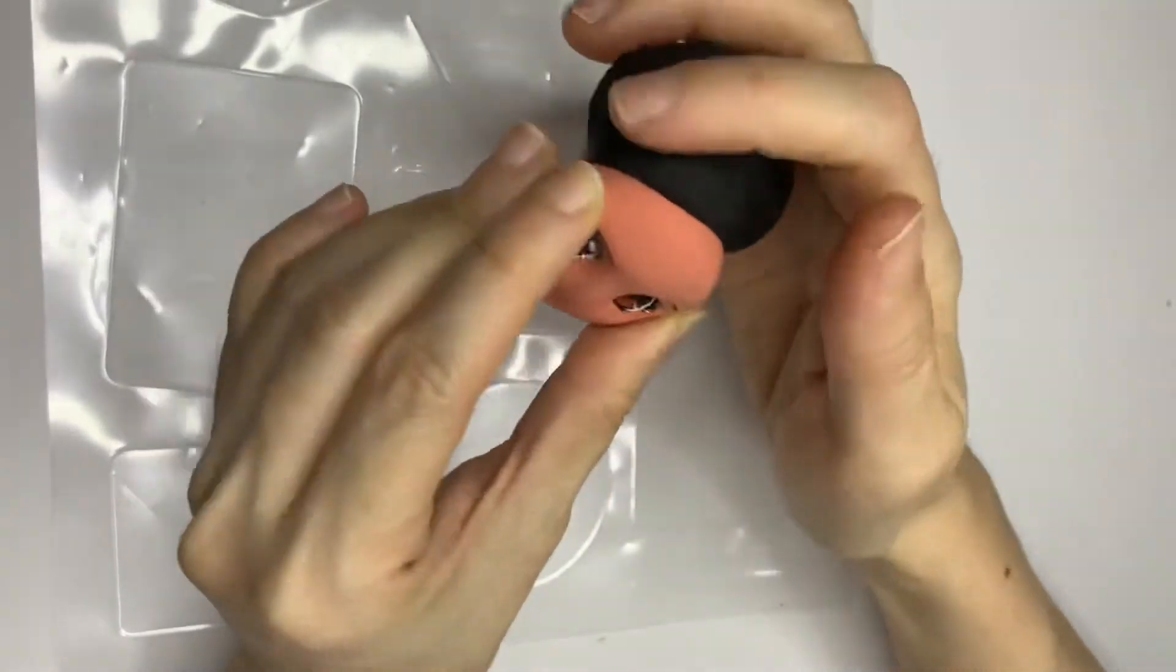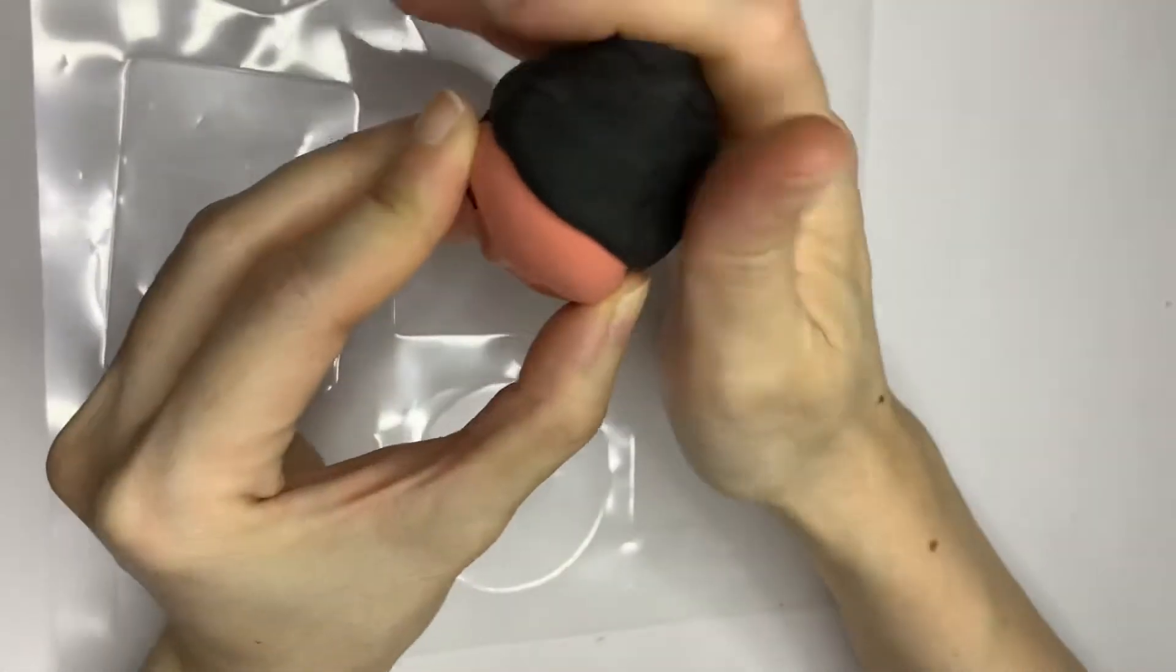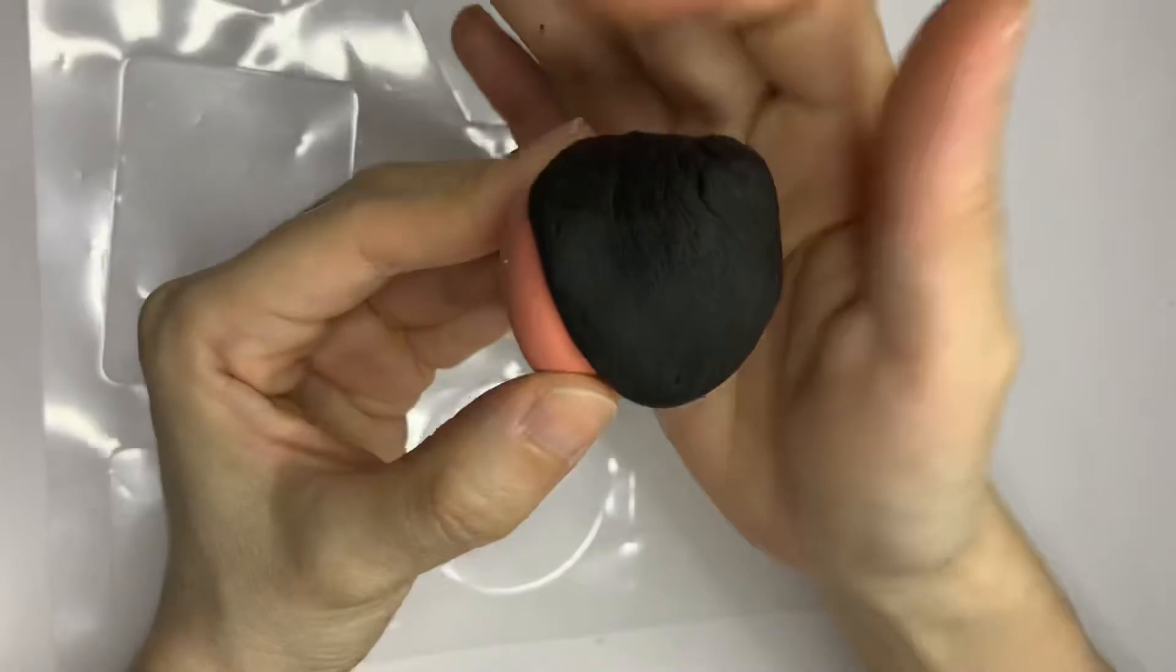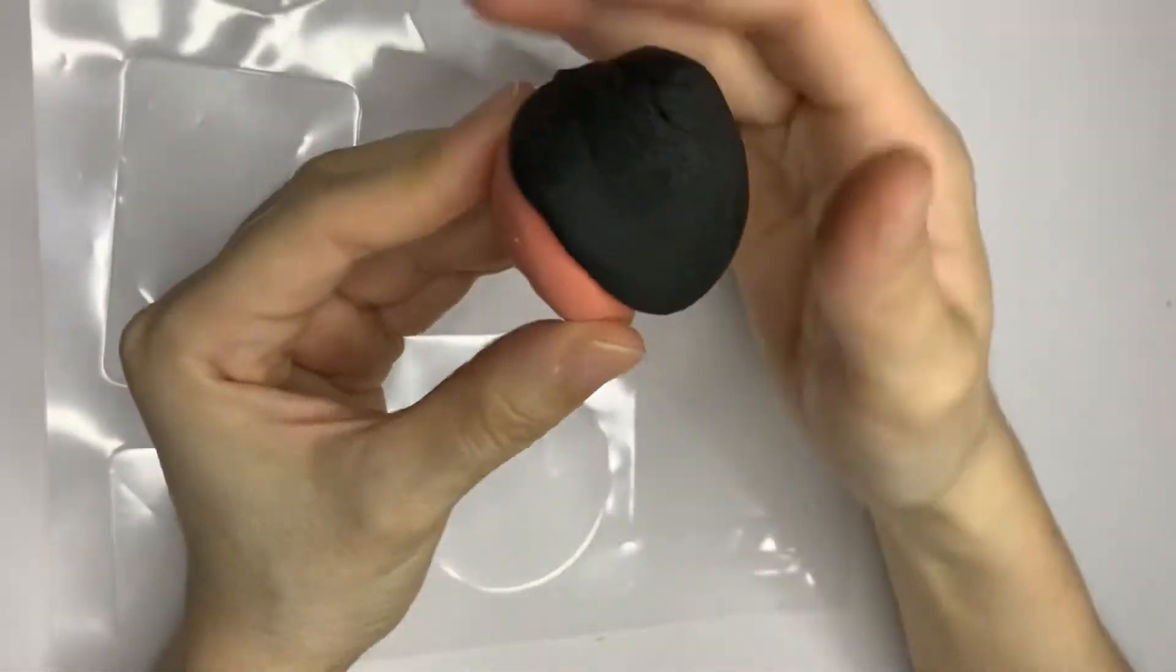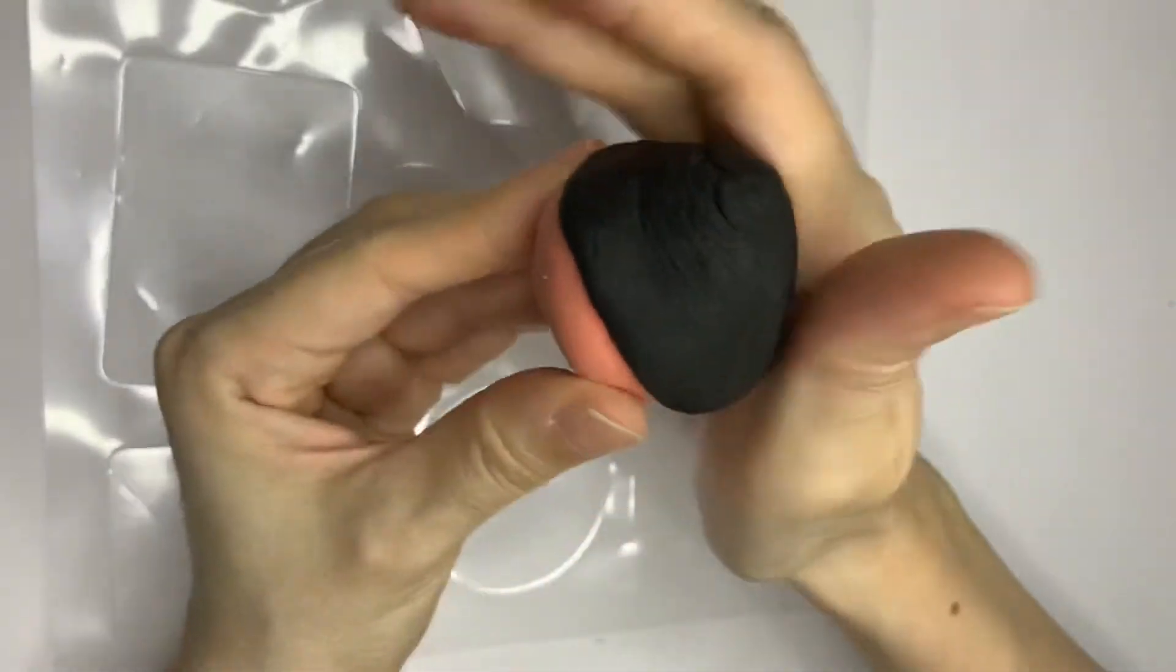Now we are going to make the hair. Start by making a big ball to cover the back part of the head. Adjust the hair upwards to create a bun.